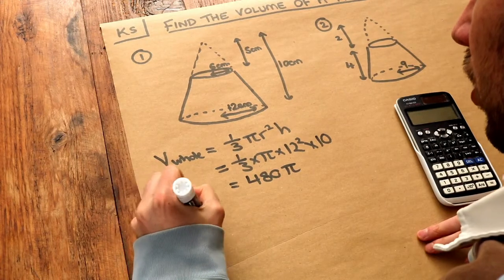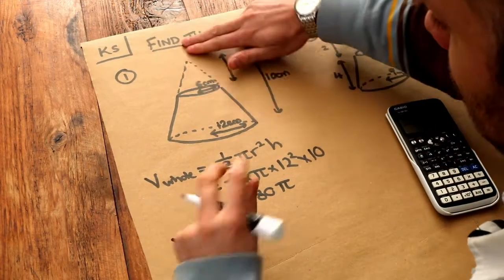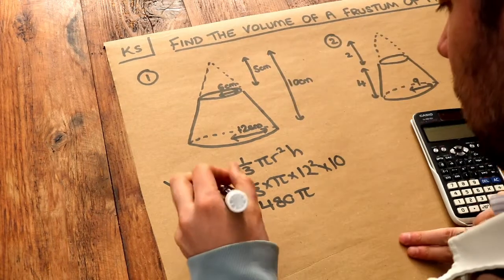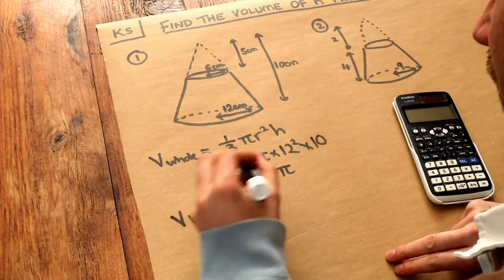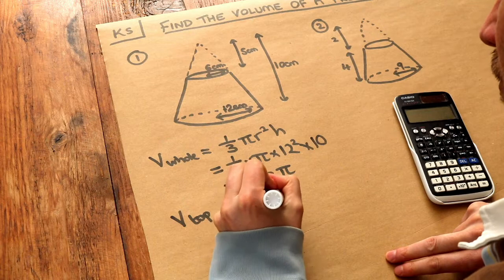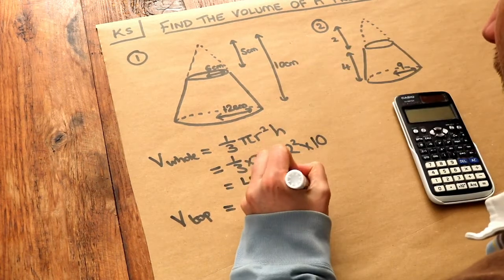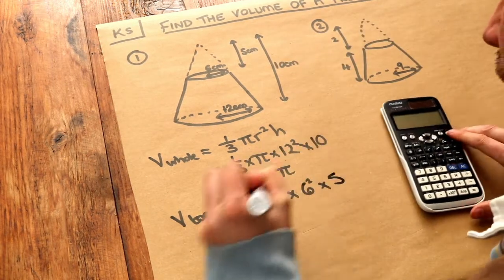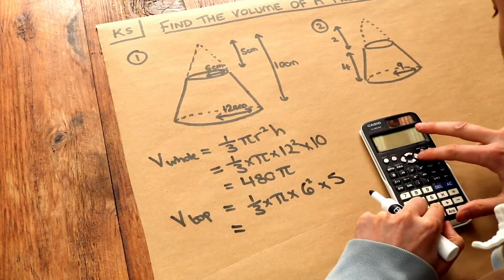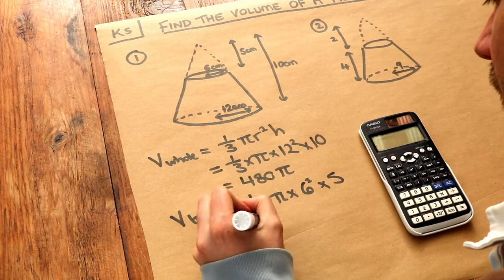And then what's the volume of this top cone that we're chopping off to leave the frustum at the bottom? Well, we do the same again. One-third times pi times r squared, the radius squared, 6 squared, times by the height, which is 5. And if we again simplify that, we get 60 pi.